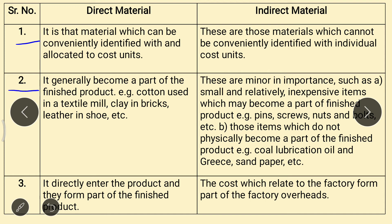Second point: for direct material, it generally becomes a part of the finished product — for example, cotton used in a textile mill, clay in bricks, leather in shoes, etc. In case of indirect material, these are minor in importance, such as small and relatively inexpensive items which may become a part of the finished product — for example, pins, screws, nuts and bolts, etc. — or items which do not physically become a part of the finished product, for example, coal, lubricant, oil and grease, sandpaper, etc.